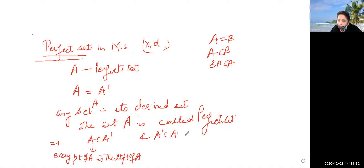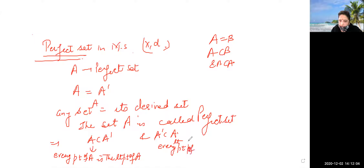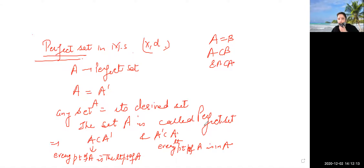The condition A-dash is contained in A means every limit point of A is contained in A — that is, every limit point of A is in A. So the two conditions together are: A-dash is contained in A, and A is contained in A-dash.